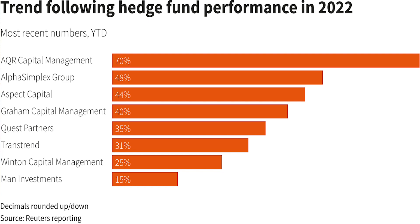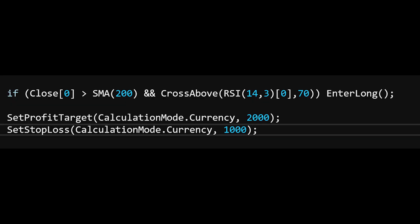Let's do an example of what a trend following strategy would be — and you can test this for yourself. Check if the current close is above the 200 simple moving average, and then enter when the RSI crosses above 70. That would be a simple long-term trend following strategy. You would buy, and then for exits, maybe put a profit target and stop loss at a two-to-one ratio — say a $1,000 profit target and a $500 stop loss. That's a simple example of a trend following strategy.